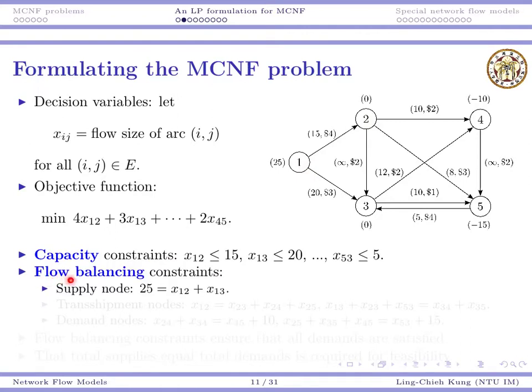One last thing is the flow balancing constraints. And that means for each node, flow in equals flow out. For a supply node, we may put the supply quantity at the left-hand side. This is the amount of flow in. And here we have flow outs. For node 1, 25 is the supply quantity. And then we count how many units flow out. The amount flow out must be exactly 25.